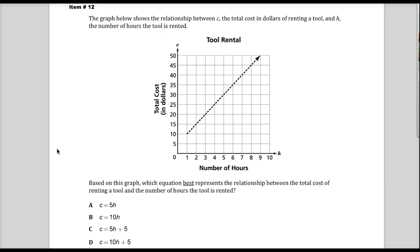The question says the graph below shows the relationship between C, the total cost in dollars of renting a tool, and H, the number of hours the tool is rented.